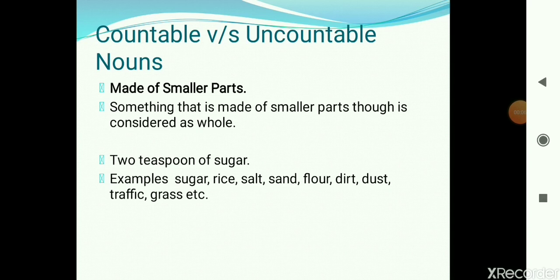Things that are made up of smaller parts but considered as a whole are uncountable. For example, sugar consists of many grains, but it is considered as a whole — you cannot count sugar. If you really want, you can count the individual grains, but then you are counting the number of grains, not sugar itself. You can count a teaspoon of sugar, but again you are counting the number of teaspoons, not the sugar. Some examples are rice, salt, sand, flour, dirt, and dust.